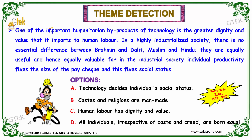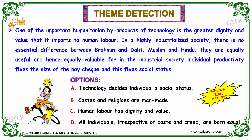One of the important humanitarian byproducts of technologies is the greater dignity and the value that it imparts to human labor. In a highly industrialized society, there is no essential difference between Brahmin and Dalit, Muslim and Hindu. They are equally useful and hence equally valuable, for in the industrial society, individual productivity fixes the size of the paycheck and this fixes social status.